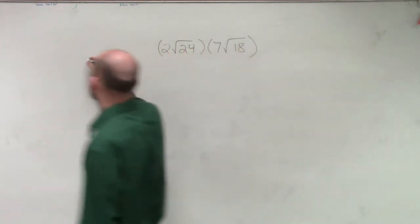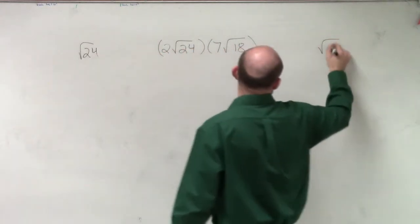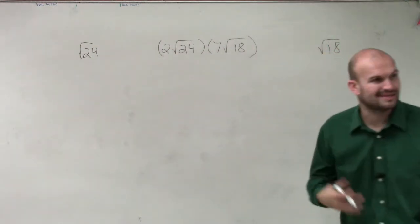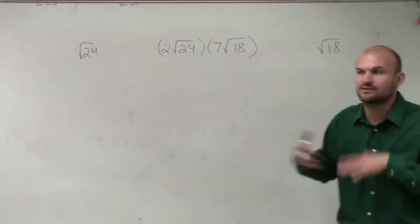So there's two radicals we need to simplify. The square root of 24 and the square root of 18, all right? Again, we've already spent time going over this, so I'm just going to review it.